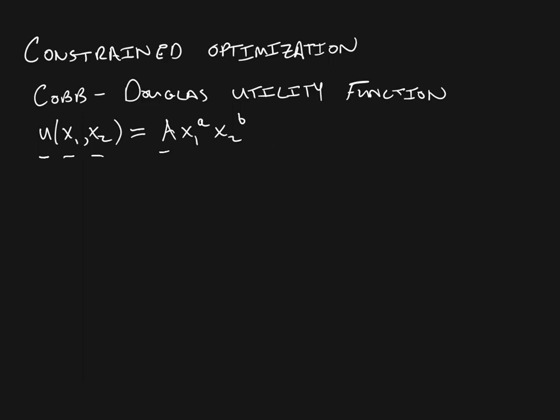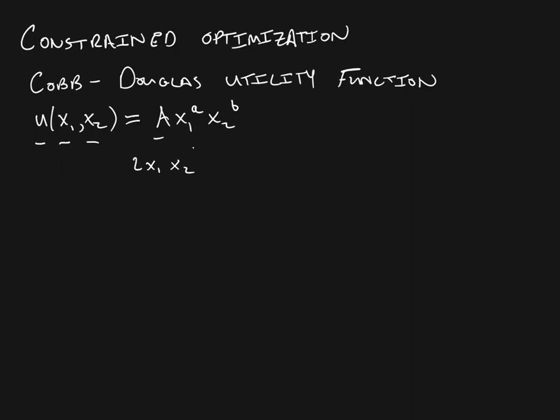For instance, if we had x1·x2 as our utility function, this would be a Cobb-Douglas utility function. If we had 2·x1·x2, this would be a Cobb-Douglas utility function. If we had 2·x1·x2^(1/2), this would be a Cobb-Douglas utility function as well. So that's just something to keep in mind — these various forms of the Cobb-Douglas utility function.